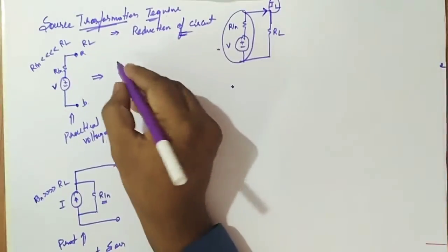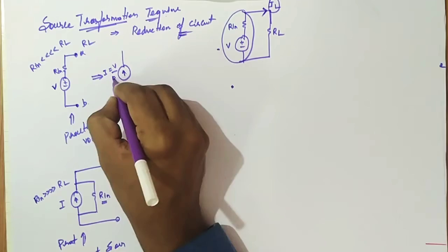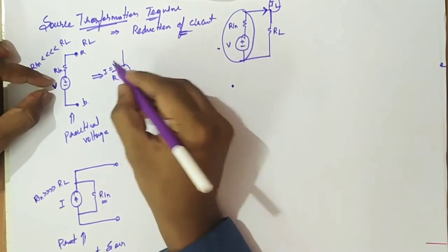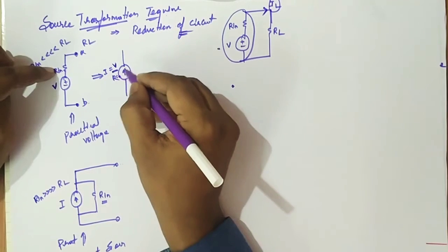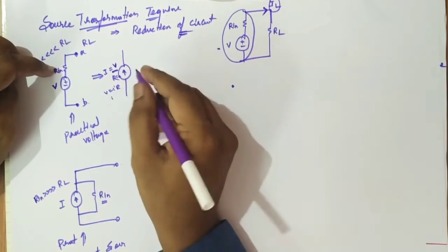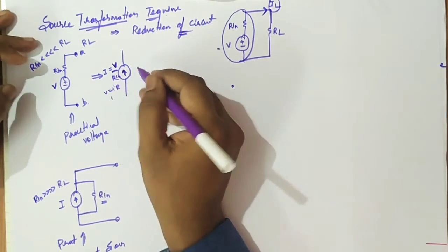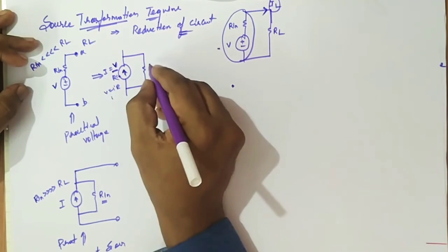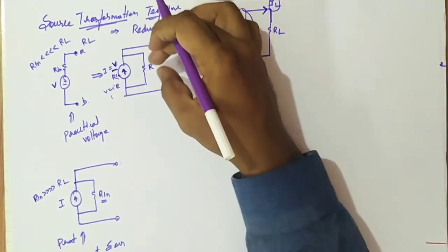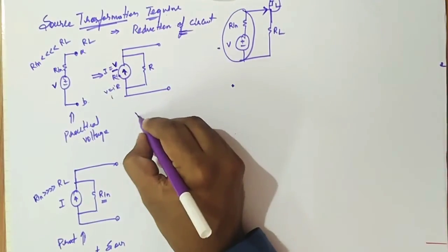If you want to change the voltage source to a current source, you will have a current source with a value of I equal to V divided by R. That is, V equals IR, so I equals V/R. This current source has a value of the source voltage V divided by R, and it has a parallel resistance R. The resistance remains the same, and the current source is replaced by the value V/R. This is the transformation of a voltage source to a current source.